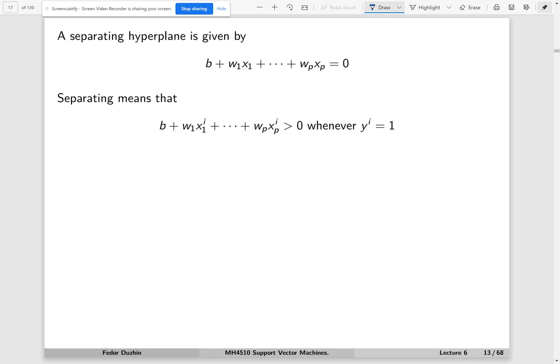The fact that it is separated means that whenever the actual observed class is 1, if we substitute this point to the hyperplane equation, then we will get an inequality with a positive sign. And if our observation belongs to the negative class, then when we substitute our x values into the equation for the hyperplane, we are going to get a negative number.